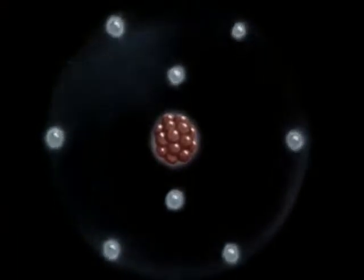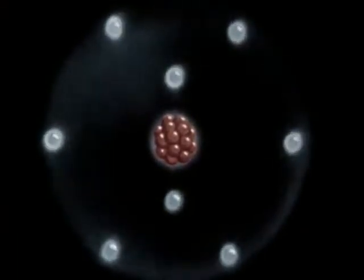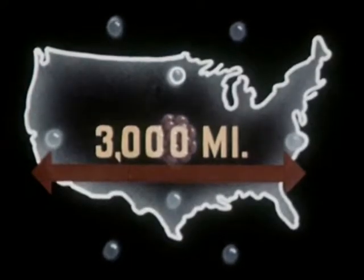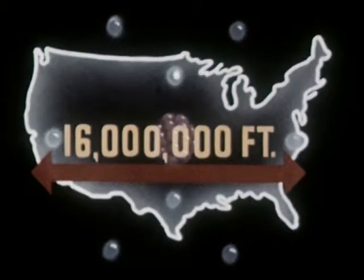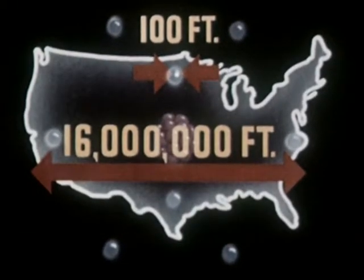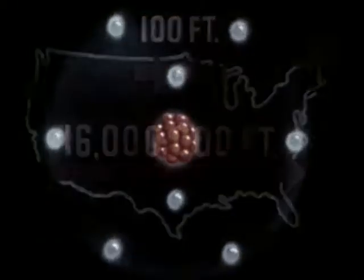And further, let's acknowledge that this is a symbol representing the atom and not an attempt to show it as it actually is. It is impossible to show the correct relative proportions of an atom on this screen. For example, if an atom could be as large as the United States, one of its electrons would be only about 100 feet across. Therefore, to tell our story, we must resort to a symbol.